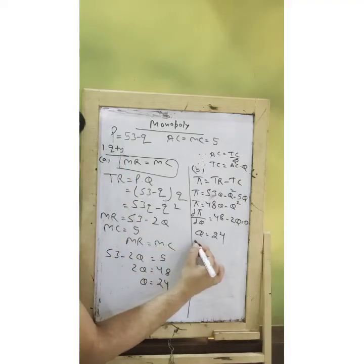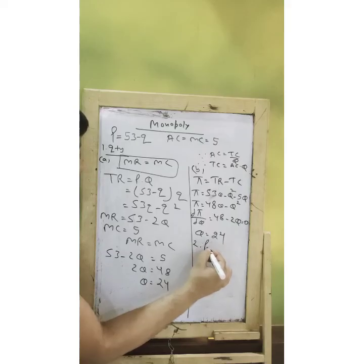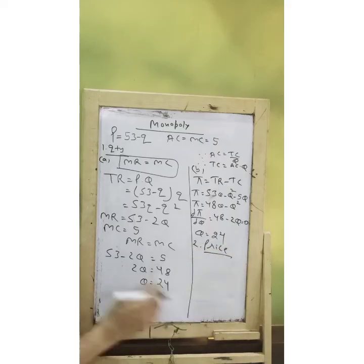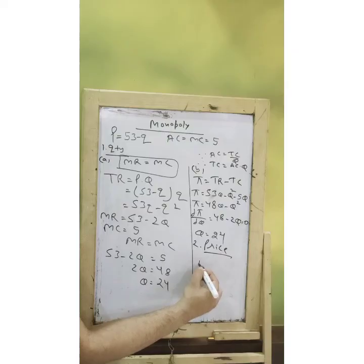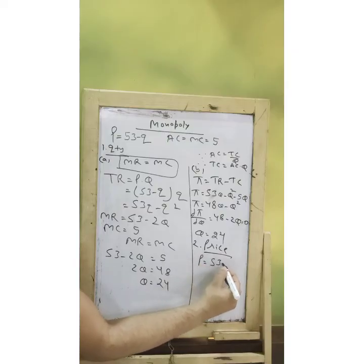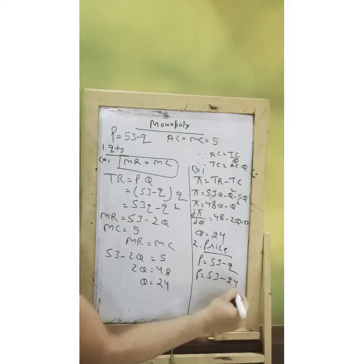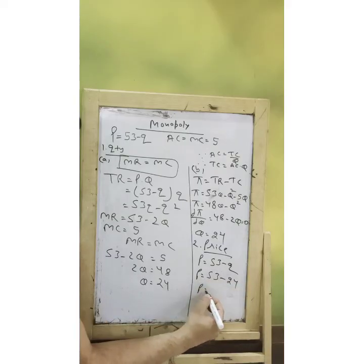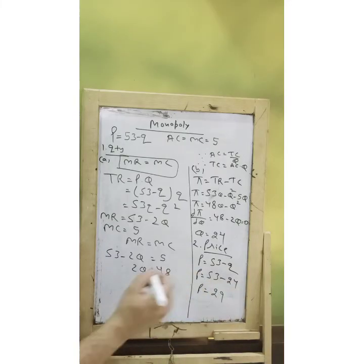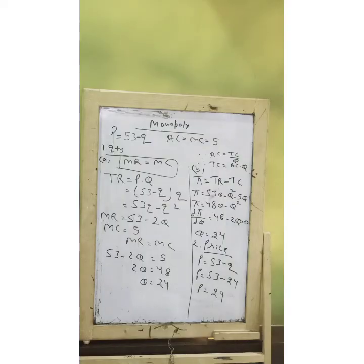Second, if I were to solve price here, it should not be difficult. Since I already have my price function P equal to 53 minus Q, I just need to put the quantity value of 24 here, and I will be able to get my price, which happens to be 29.